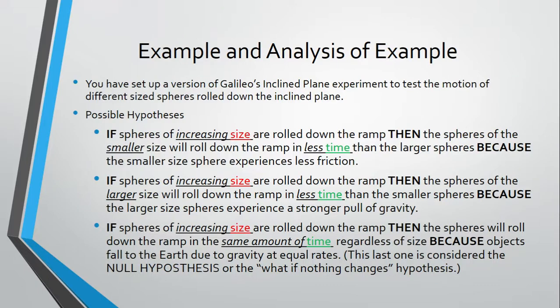So I'm going to take the setup for the version of the Galileo's Inclined Plane Experiment. This is pretty much the speed lab experiment that many people have been constructing in the Integrated Chemistry and Physics B course.